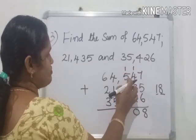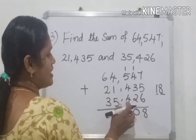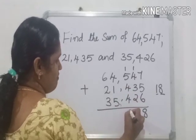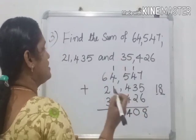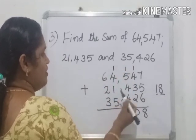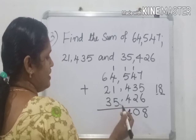Next, 5 plus 1 is 6, 6 plus 4 is 10, 10 plus 4 is 14. 4 right here, 1 carryover. Then next, 1 plus 4 is 5, 5 plus 1 is 6, 6 plus 5 is 11. 1 right here, 1 carryover.